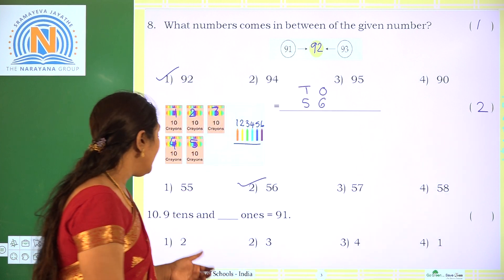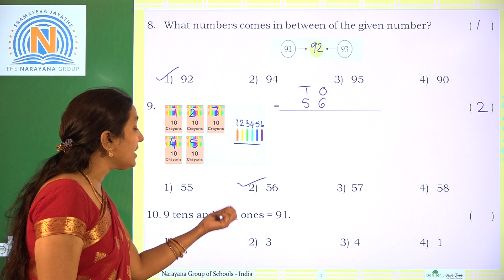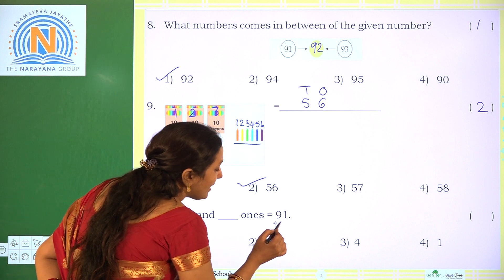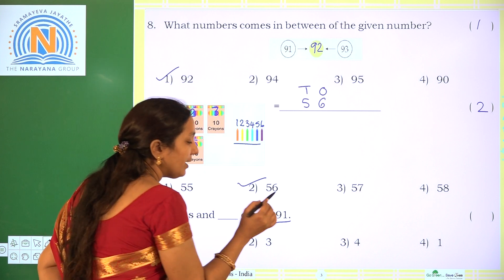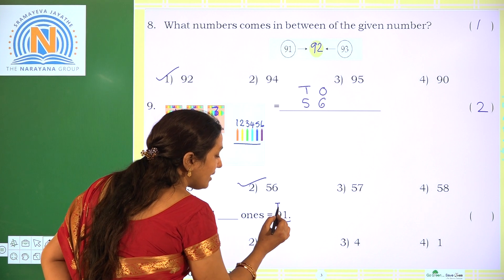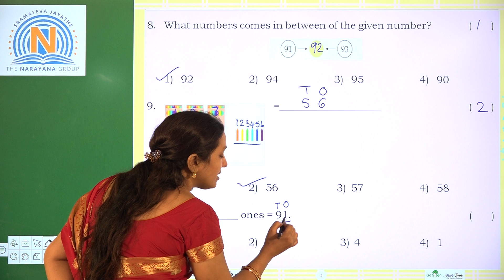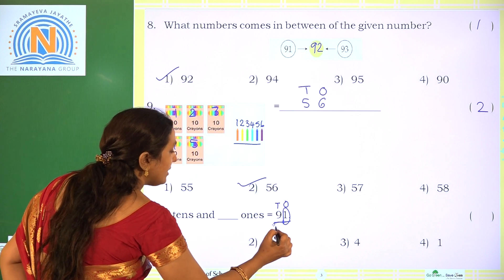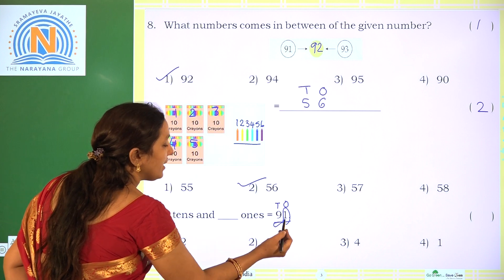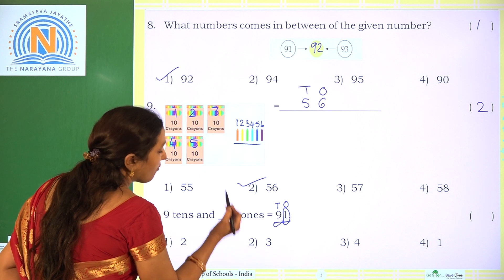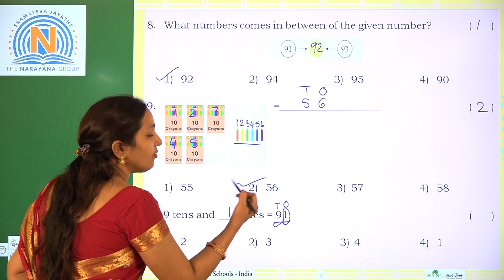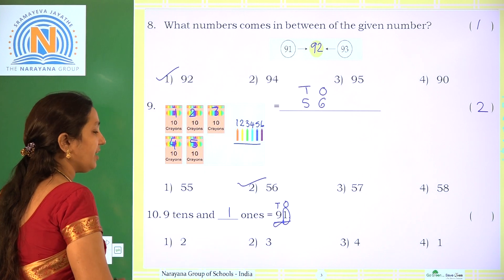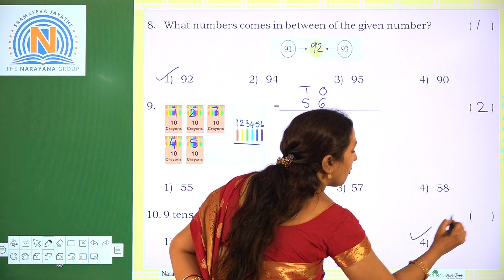Next: 9 tens and blank ones equals 91. The given number is 91. The tens place is 9 and the ones place is 1. So 9 tens and 1 one equals 91. The correct option is option 4.